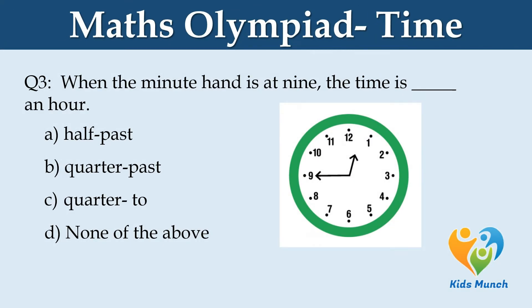When the minute hand is at 9, the time is dash an hour. Option A: half past. Option B: quarter past. Option C: quarter to. Option D: none of the above.